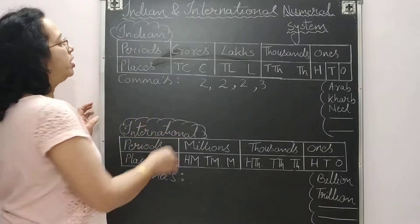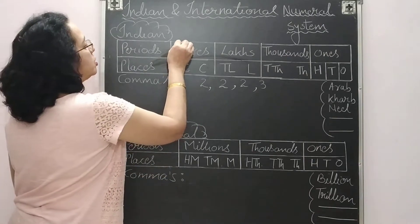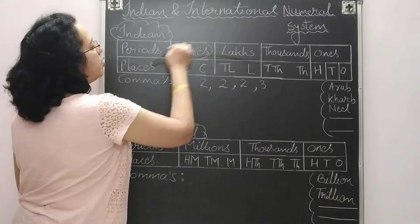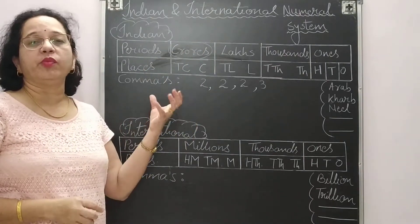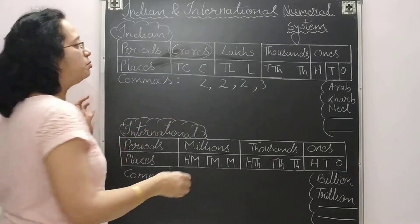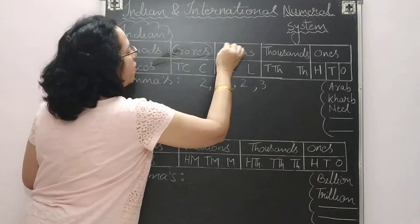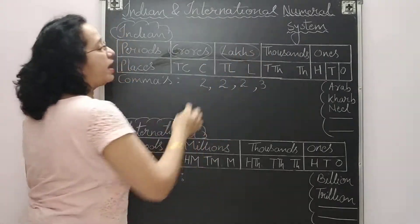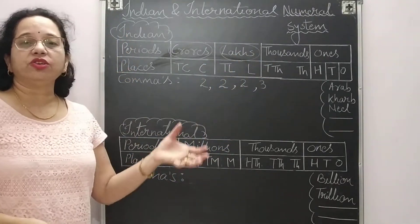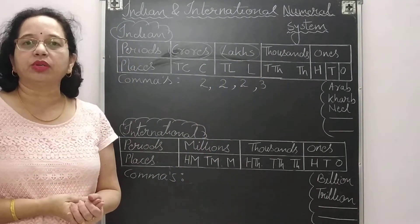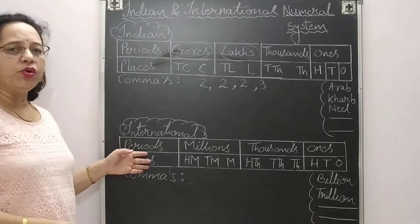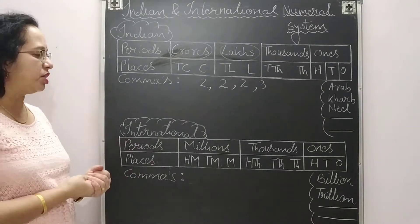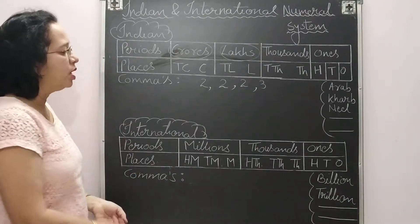The important keywords here are crores and lakhs. If you can see the word crore or lakh, it means this is the Indian number system.